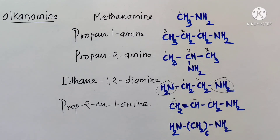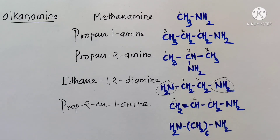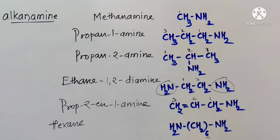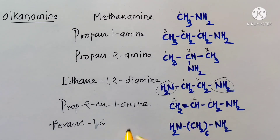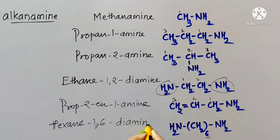For a six-carbon chain with amino groups on the first and sixth carbon atoms, we use 'diamine.' Six carbon atoms correspond to hexane, so the IUPAC name is hexane-1,6-diamine.